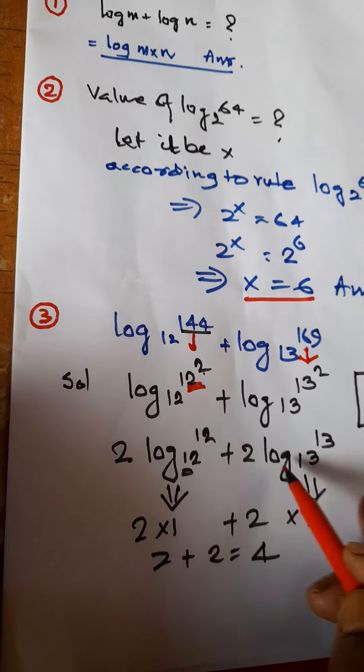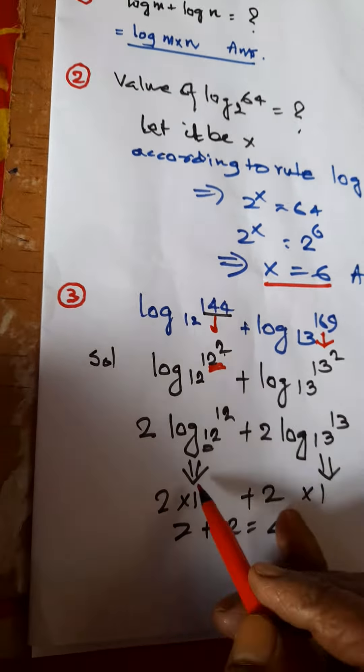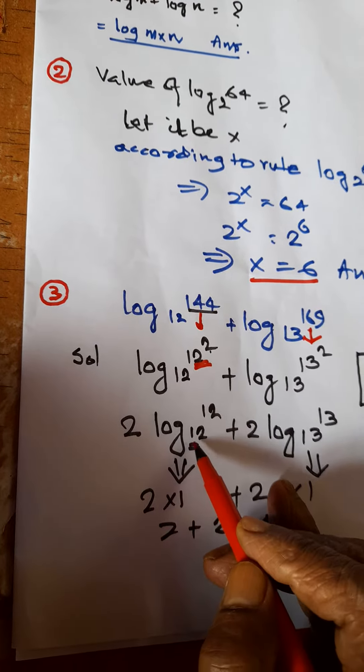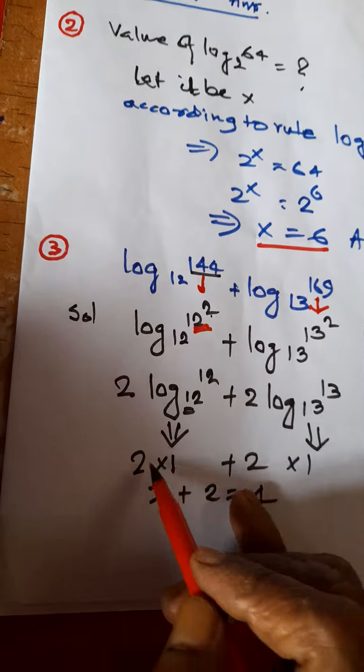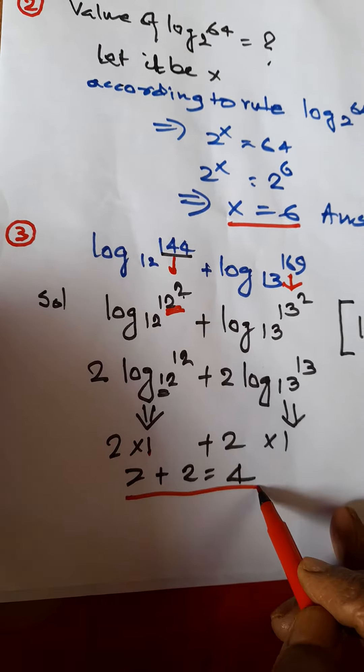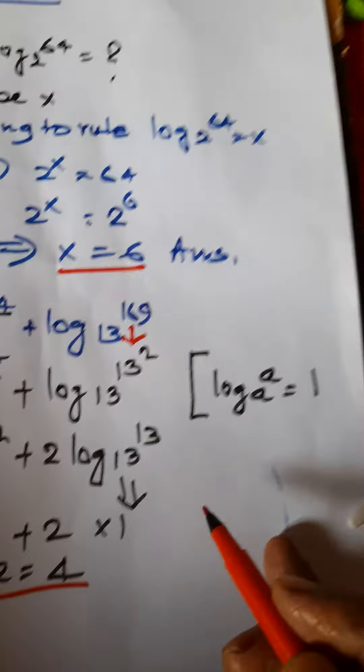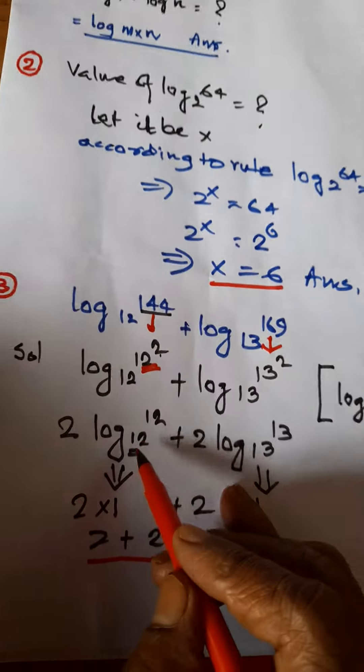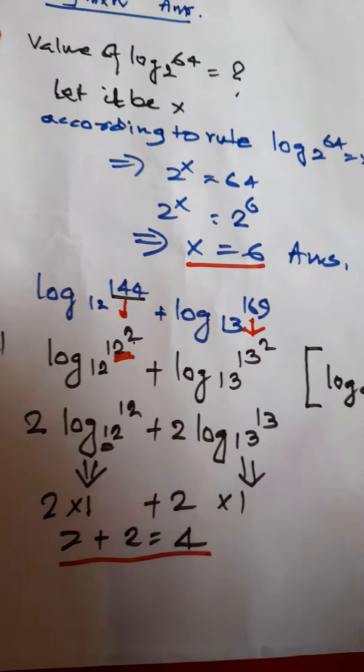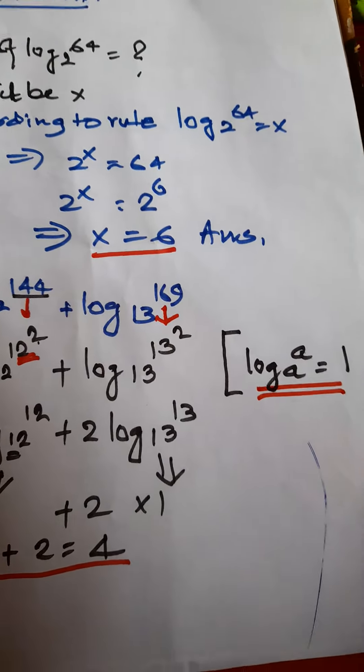The value of log₁₂12 is 1 and log₁₃13 is 1. So 2×1 + 2×1 equals 2 + 2 = 4. You might ask which formula makes log₁₂12 equal to 1. The formula applied here is: log base a of a equals 1.